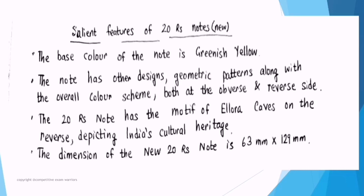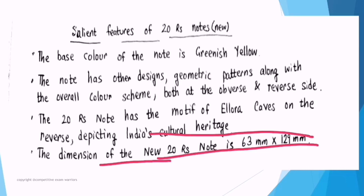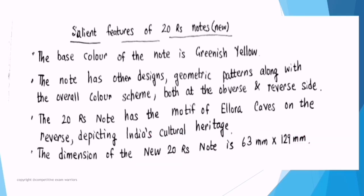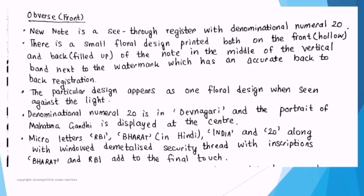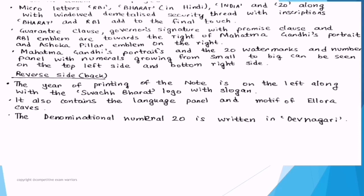Finally, the salient features of the 20 rupees note — the last note discussed in this lesson. The base color of the note is greenish yellow, very important. The note has geometric patterns and an overall color scheme on both the obverse and reverse sides. The motif on the reverse is Ellora Caves, depicting the country's cultural heritage. The dimension of the new 20 rupee note is 60 millimeter by 120 millimeter. On the reverse, the year of printing is on the left, along with Swachh Bharat logo with slogan, language panel, motif of Ellora Caves, and denomination numeral 20 in Devanagari.